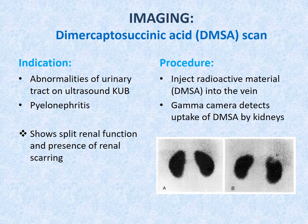DMSA (dimercaptosuccinic acid) scan is indicated when abnormalities are noted on ultrasound or the child is diagnosed with pyelonephritis. This scan shows split renal function and the presence of renal scarring. The procedure involves intravenous injection of radioactive DMSA, which is taken up by the kidneys and detected by a gamma camera. In the example shown, uptake in patient A is normal, whereas there is an area of reduced uptake over the top part of the left kidney in patient B.